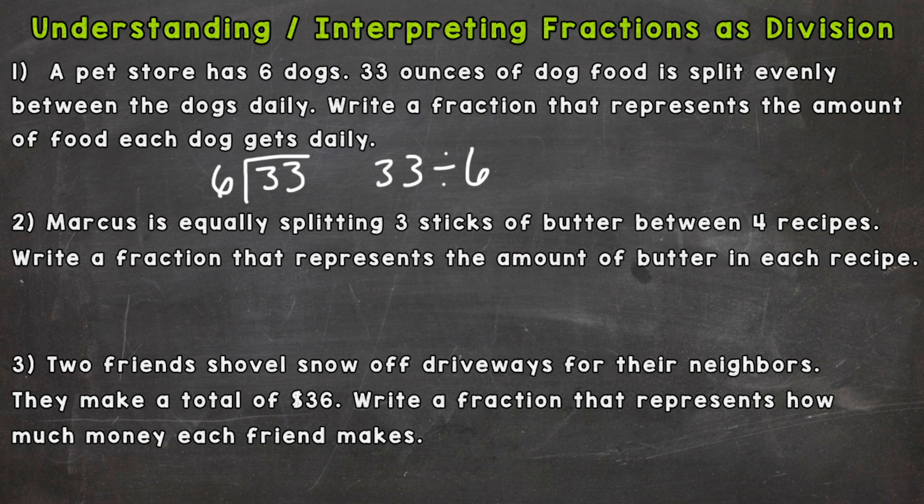The first thing we need to do is figure out what is being divided up. The number being divided up is the 33 ounces that's being split between six dogs, so whatever is being divided up is your numerator. It goes on top.